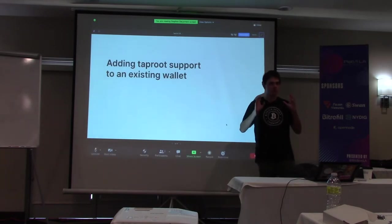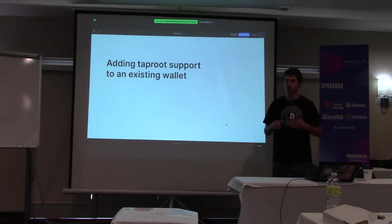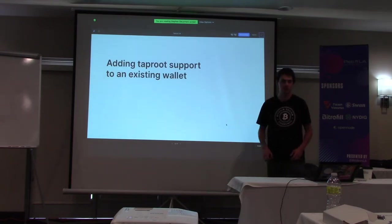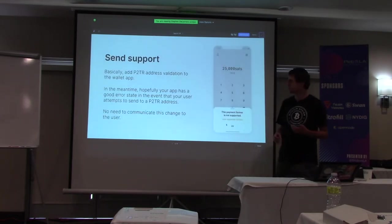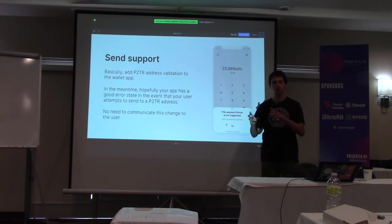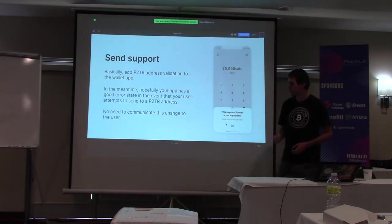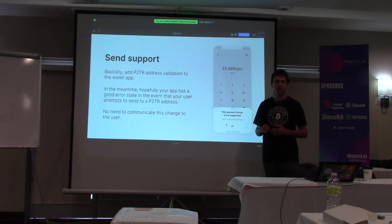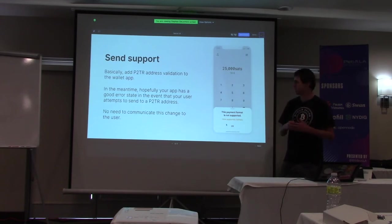The most important thing wallets and Bitcoin companies can get involved with right now is really just adding support for Taproot to their existing wallets or exchanges. Low hanging fruit for that is adding send support. There's a good page on the Bitcoin wiki that tracks adoption of BEC32 and BEC32M — basically the address format Taproot uses. Far more wallets support sending right now. I think all you really have to do is add some kind of address validation to make sure it's a valid address before you send.